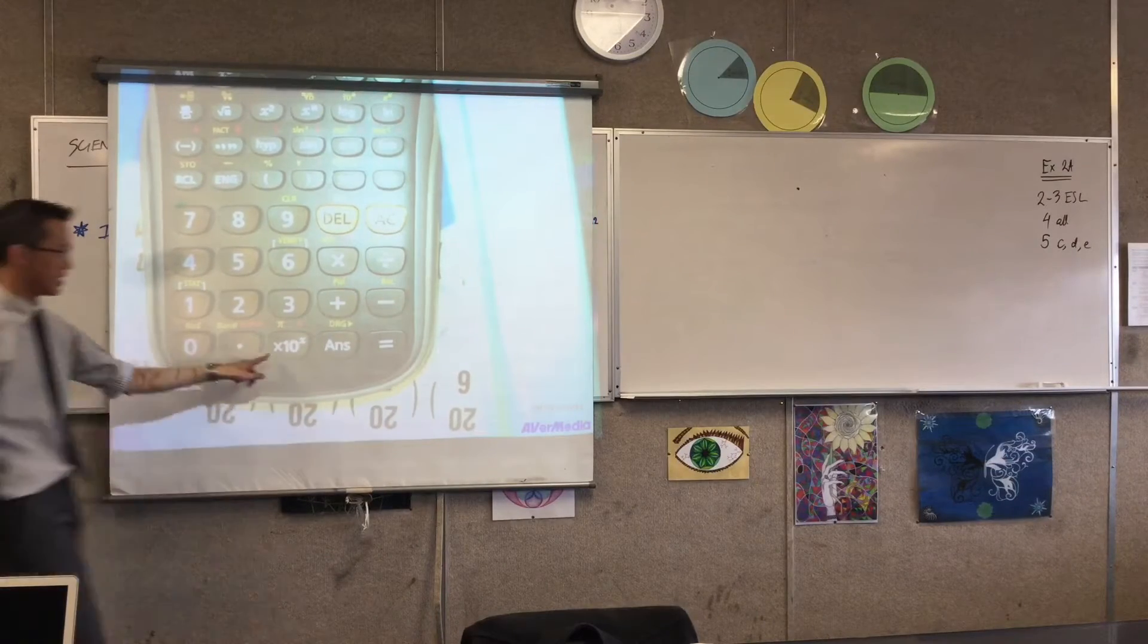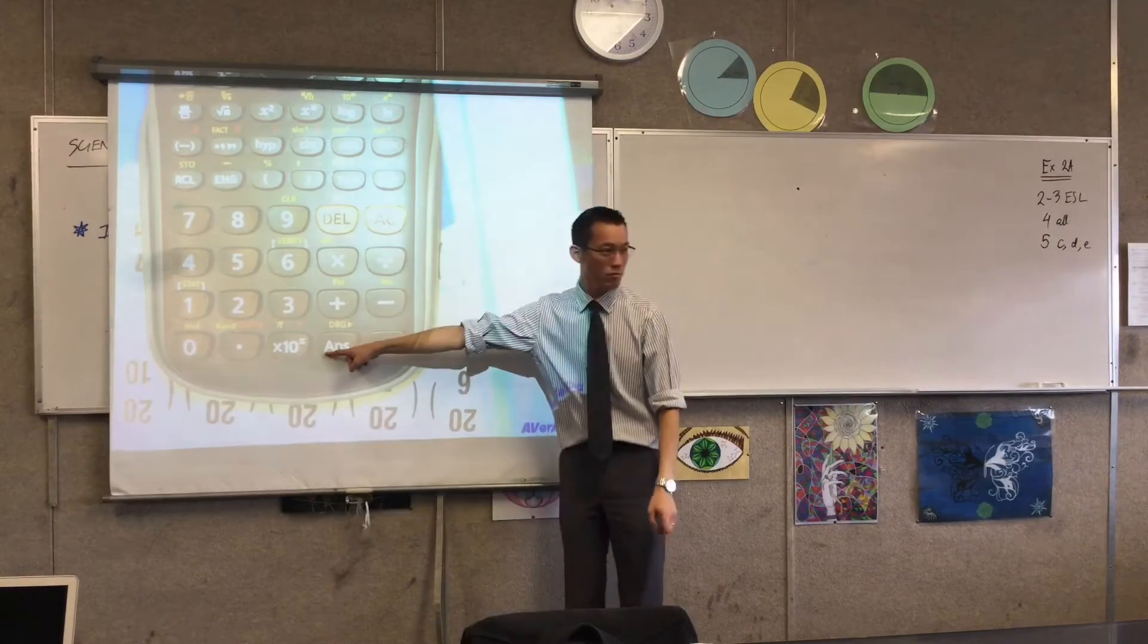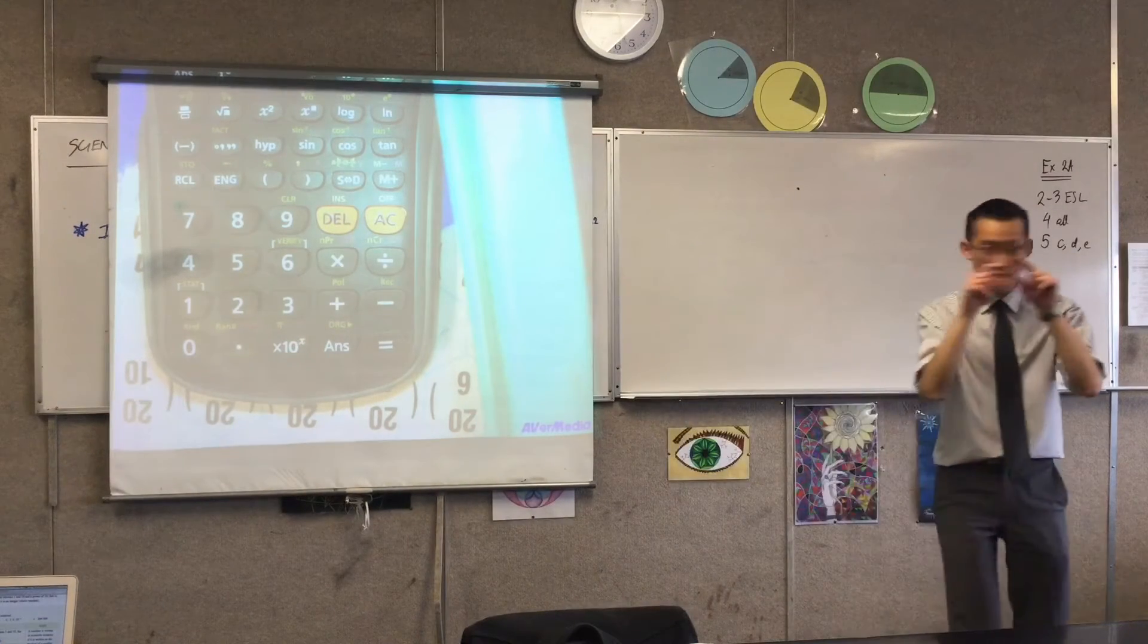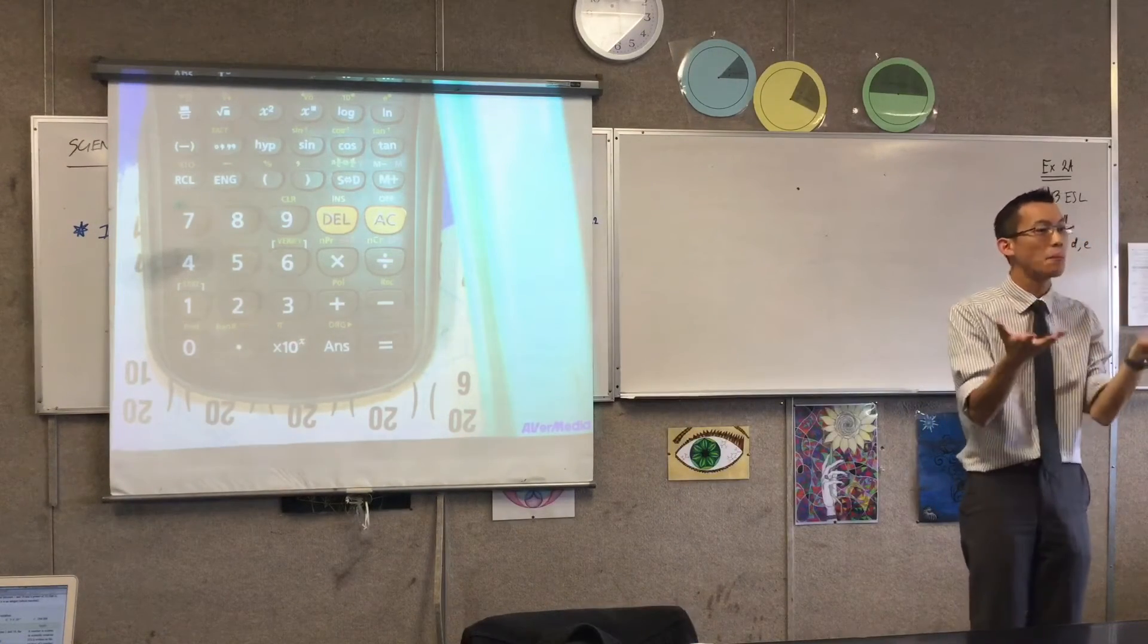Can you see this guy down here? Right down the bottom. What does it say? Times 10. And then there's an X on there, which means some power.